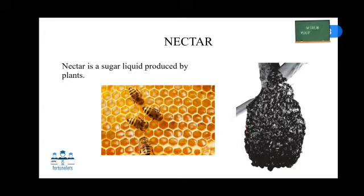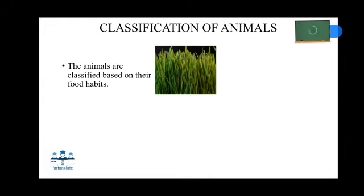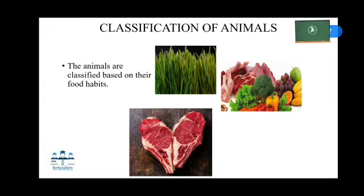So far we have learnt how animal products are being used as food. Now let's learn how animals are classified according to their food habits. Animals are classified according to their food habits as herbivores, carnivores, and omnivores.